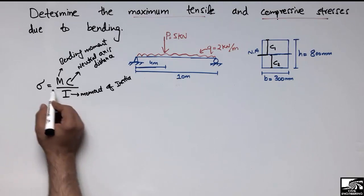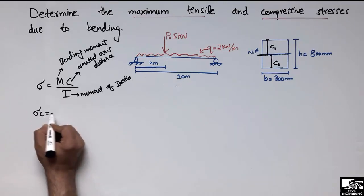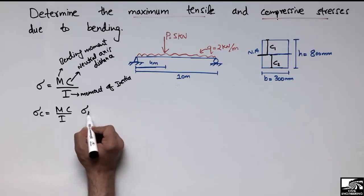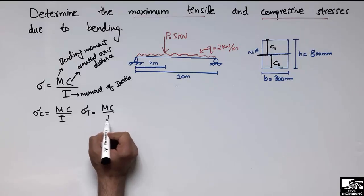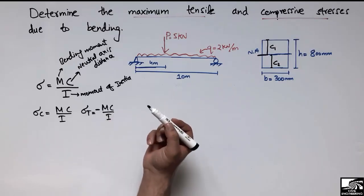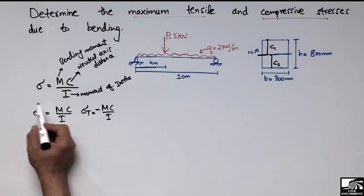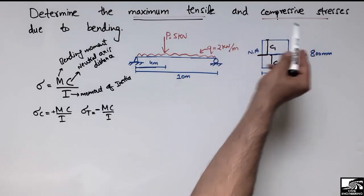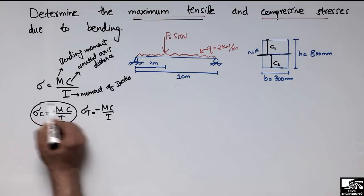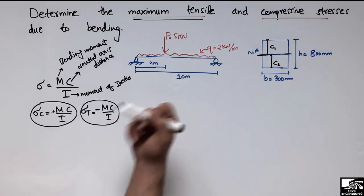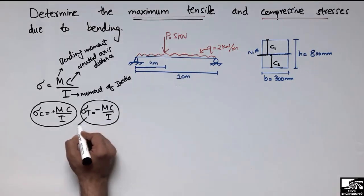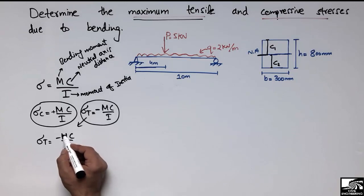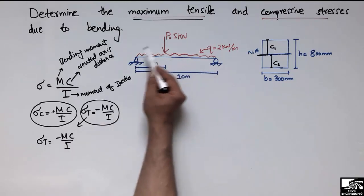This formula can be used to find out the bending stresses — either tensile or compressive stresses. For compressive stress: sigma_c equals Mc over I. For tensile stress: sigma_t equals negative Mc over I, because bending stresses appear as compressive and tensile pairs — if one is positive, the other is negative. For maximum tensile stresses, I will use sigma_t equals negative Mc over I.